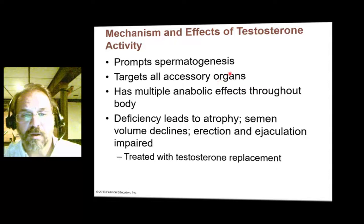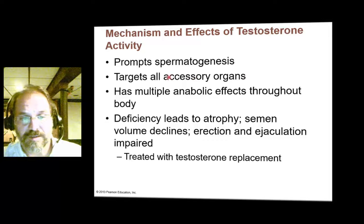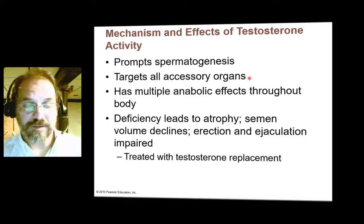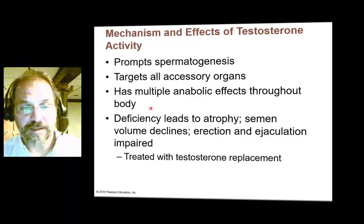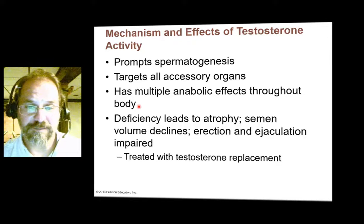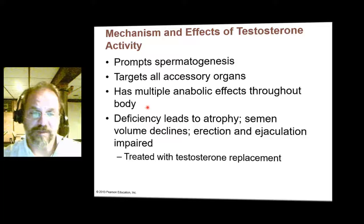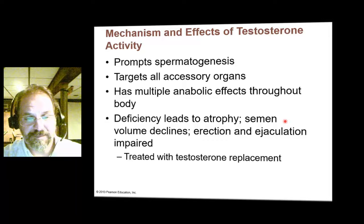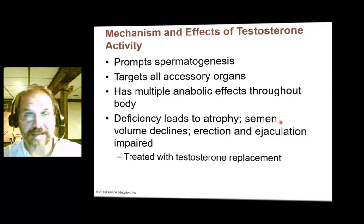What does testosterone do? First and foremost, it's produced by the interstitial cells and causes the Sertoli cells to stimulate spermatogenesis — that's its main role. It targets all accessory organs, upregulating secretions from the seminal vesicles, the prostate, Cowper's gland, and mucus glands involved in sexual activity. Testosterone also causes an increase in epinephrine and growth hormone usage, giving it a generalized metabolic anabolic effect, causing hypertrophy of connective tissues especially muscle and bone. It also stimulates sexual desires in the brain.